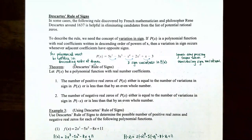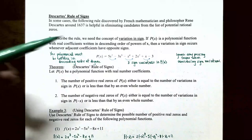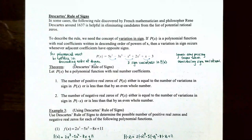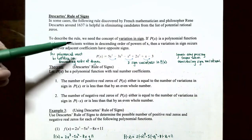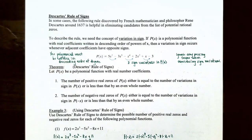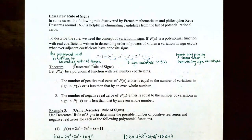To describe the rule we need the concept of variation in sign. If P of x is a polynomial function with real coefficients — not necessarily integer coefficients — written in descending order of powers of x, then a variation in sign occurs when two adjacent coefficients have opposite signs. Let's look at an example.